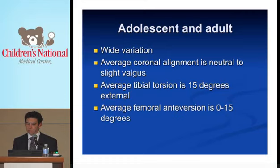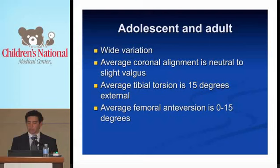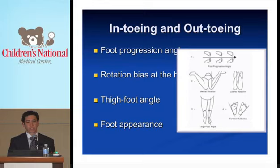In the adolescent and adult, wide variation is noted. The average coronal standing alignment is straight legs to very slight valgus — about seven degrees on average. The average tibial torsion is 15 degrees external. Frequently, slight internal rotation at the hip will nullify the external tibial rotation and the feet will look straight. The average femoral anteversion — the internal rotation at the hip — is 0 to 15 degrees.